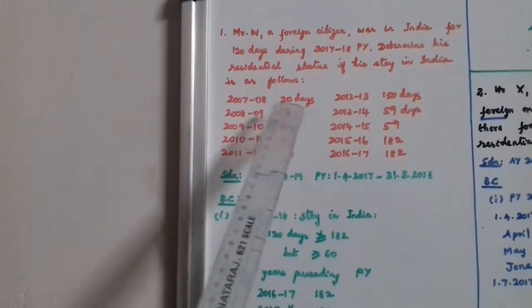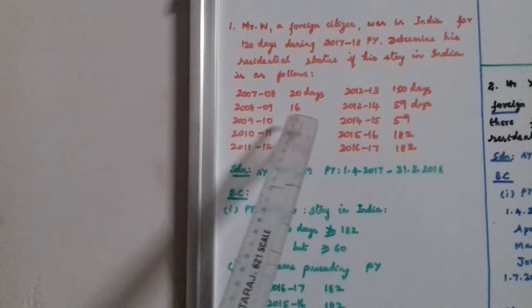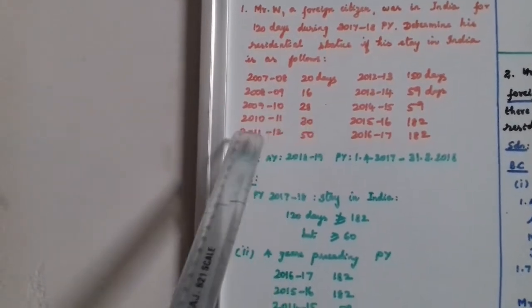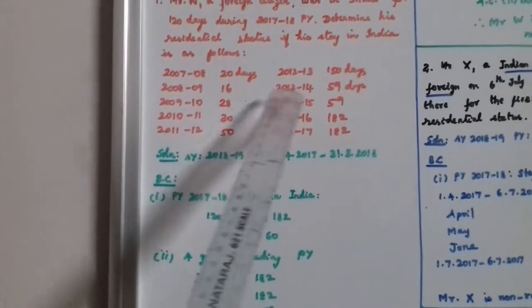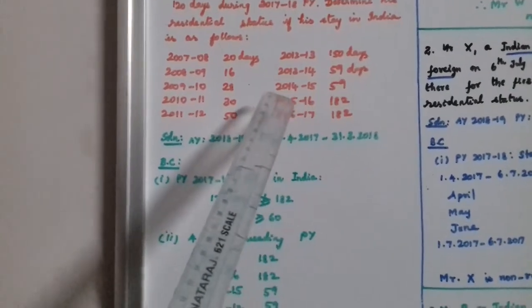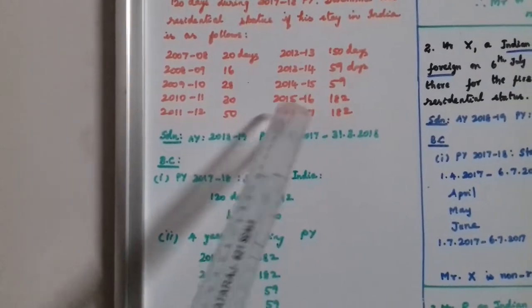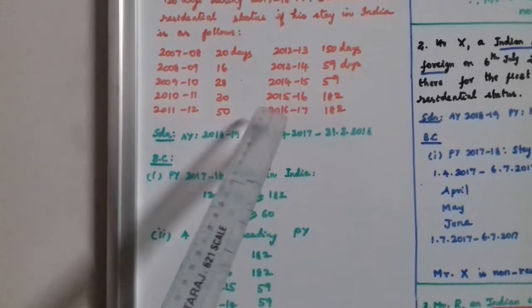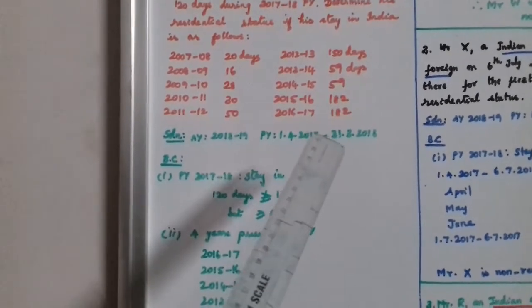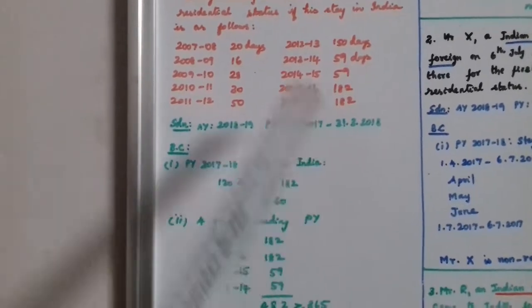2007-08: 20 days, 2008-09: 16 days, 2009-10: 28 days, 2010-11: 30 days, 2011-12: 50 days, 2012-13: 150 days, 2013-14: 59 days, 2014-15: 59 days, 2015-16: 182 days, 2016-17: 182 days.